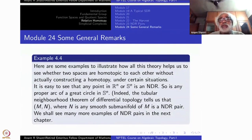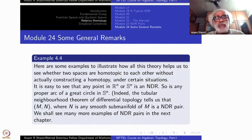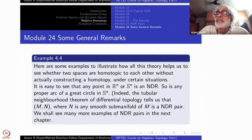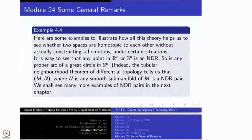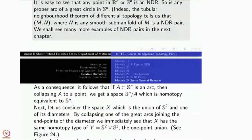The tubular neighborhood theorem in differential topology, if you have learned it, will tell you that a manifold and a sub-manifold — a compact sub-manifold, or in general, manifold and sub-manifold is good enough — forms an NDR pair. Later on, when you study simplicial complexes, you will have many examples of NDR pairs. In particular, when you have NDR, the inclusion map is a cofibration.